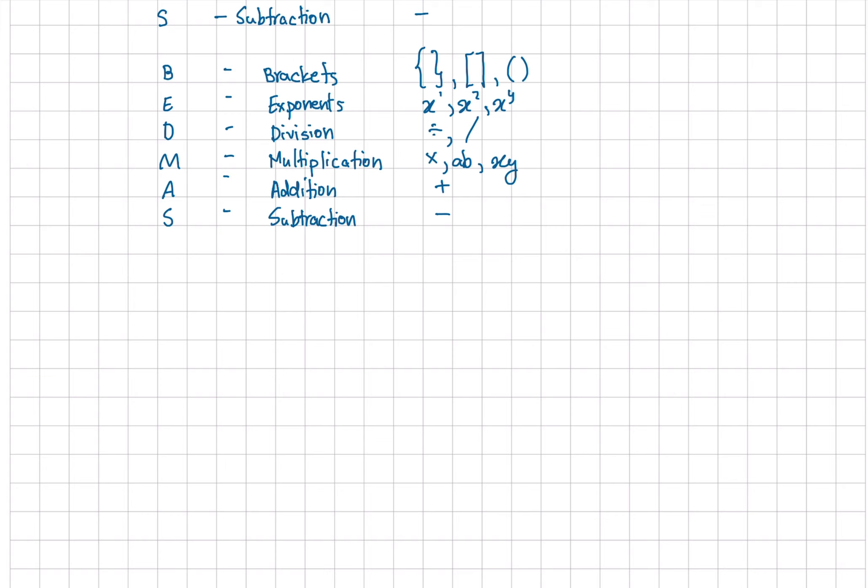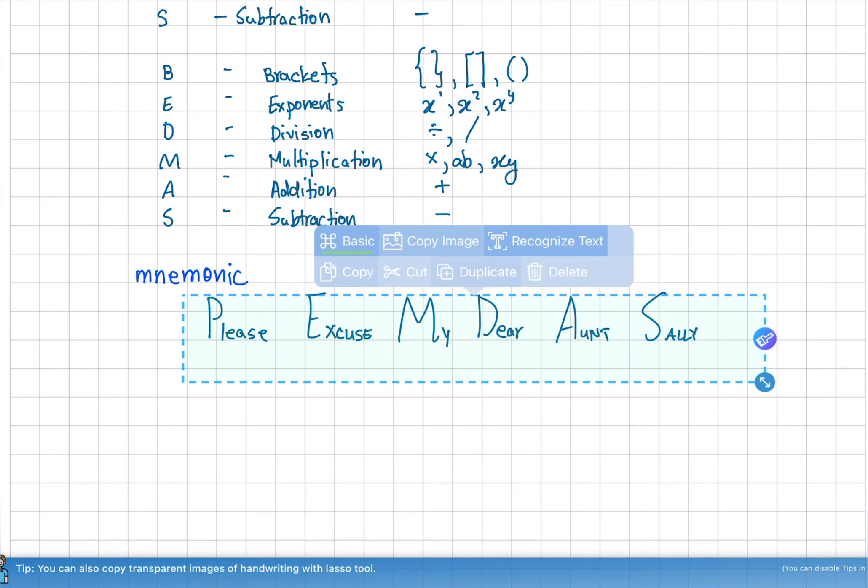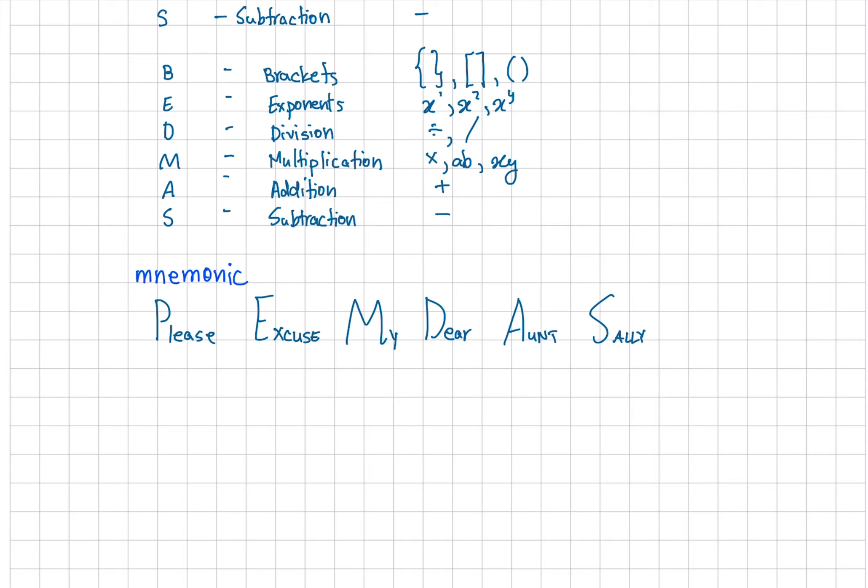We have a mnemonic that you can use so that you don't forget this. The mnemonic is: Please Excuse My Dear Aunt Sally. This is a funny sentence that you can remember so that you don't forget PEMDAS, because if you look at it, it has P-E-M-D-A-S which spells out PEMDAS.